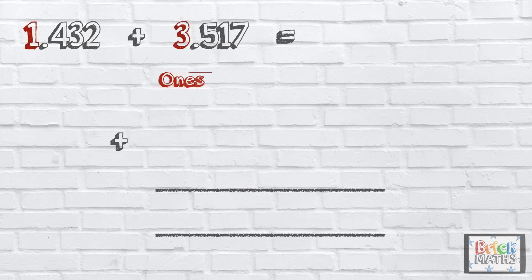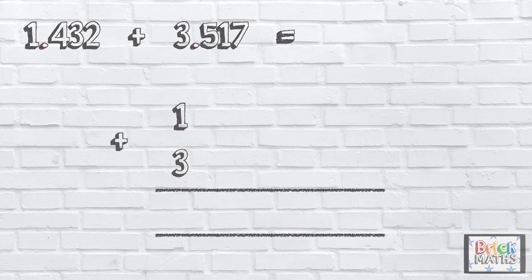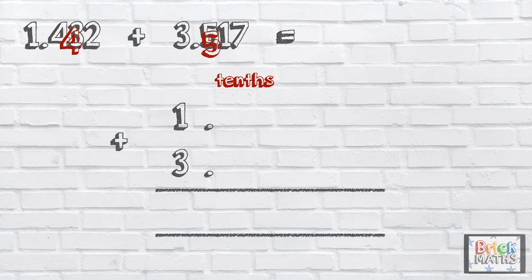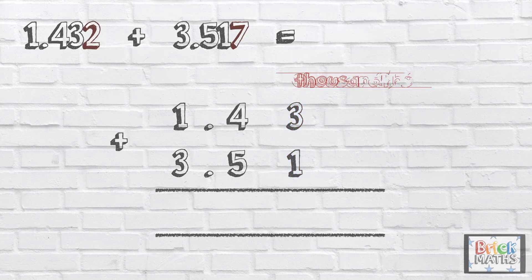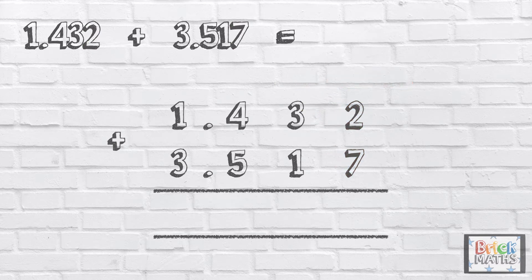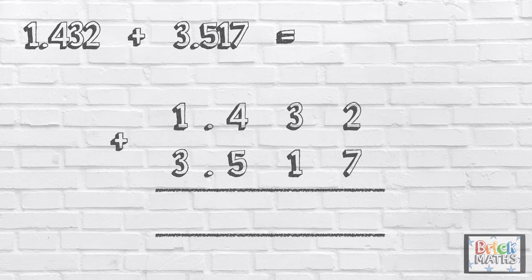So we have the ones, then we have the decimal points, then we have the tenths, then we have the hundredths, and then we have the thousandths. Now that our columns are set out correctly we can add the digits. Remember when we use the column method to add and subtract numbers we work from right to left.